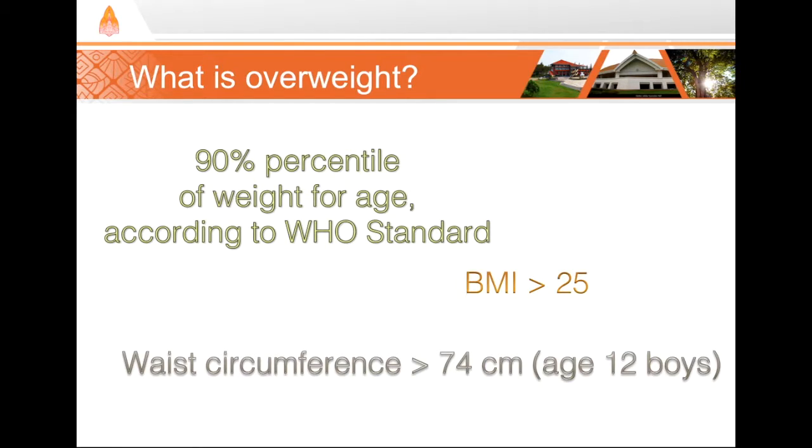Each has its own weakness, but we'll choose waist circumference. Any child with a waist circumference that exceeds a certain number, such as 74 centimeters for boys age 12, will be classified as overweight. Any child with a waist circumference under that number is not overweight.